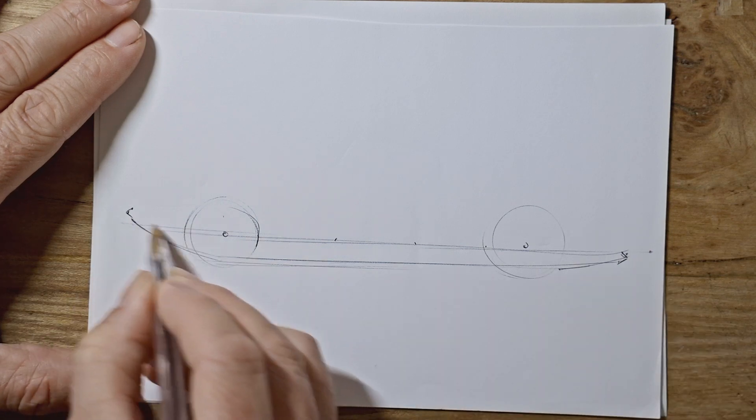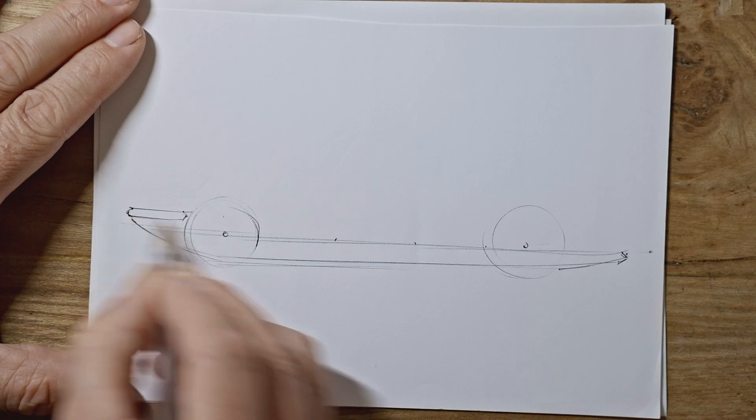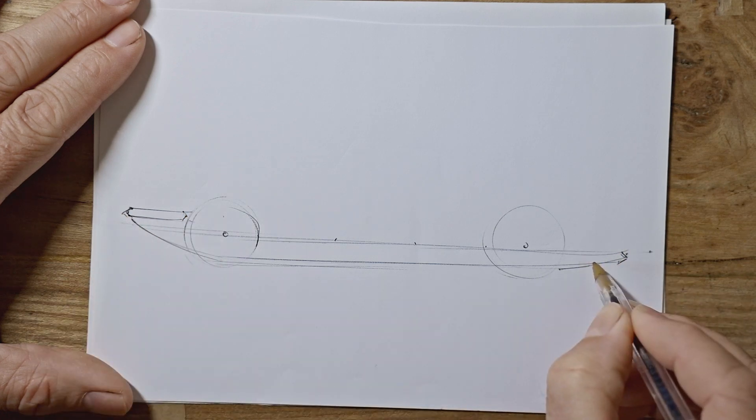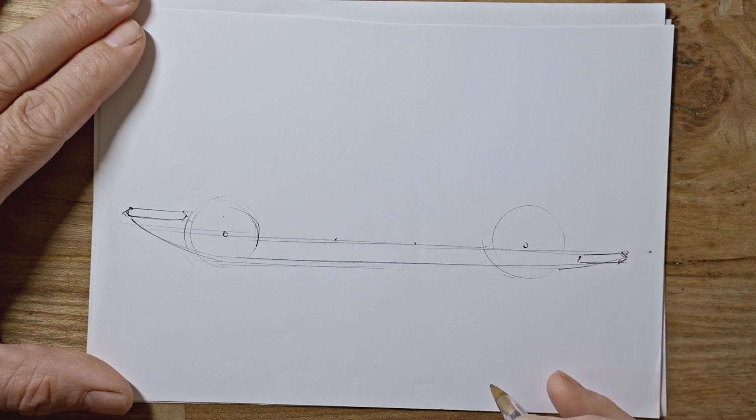We can do the bumpers at this point, I suppose. So just add a bit of a box shape with a nice point. Slightly shorter one at the back, there's your bumpers.